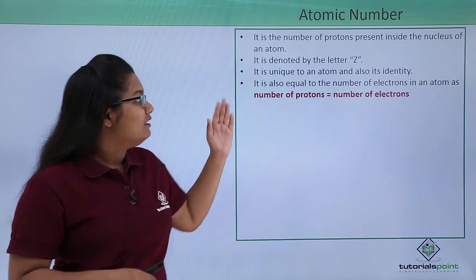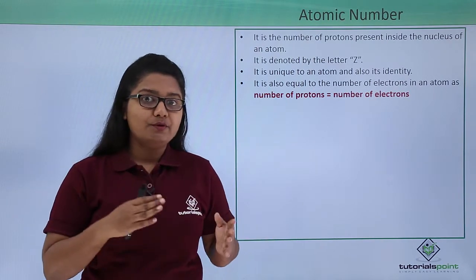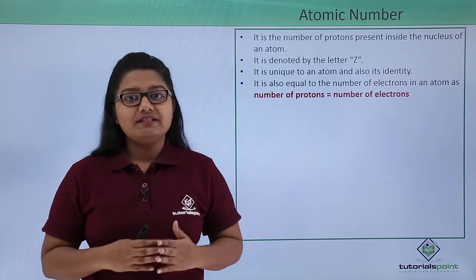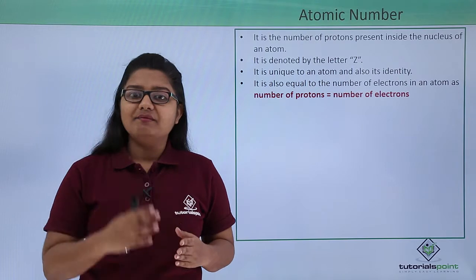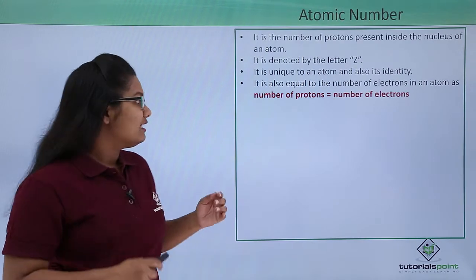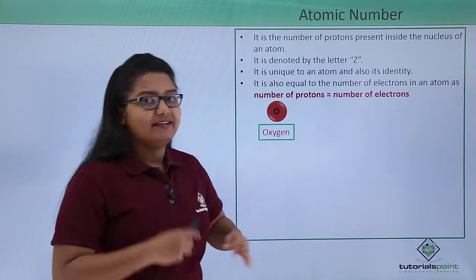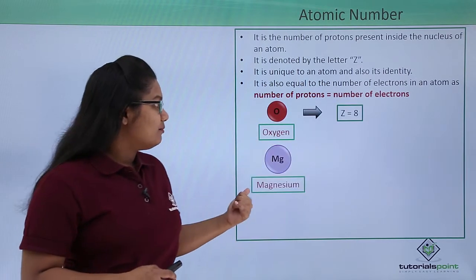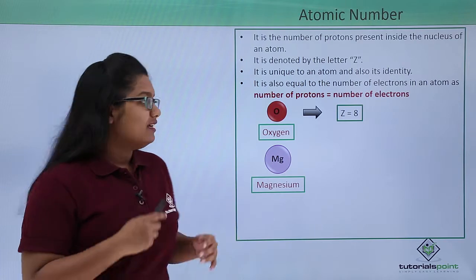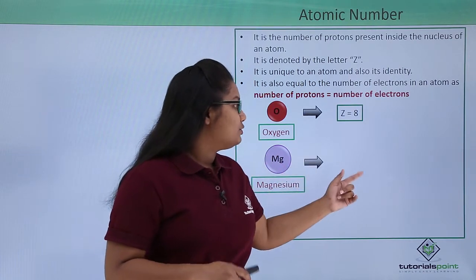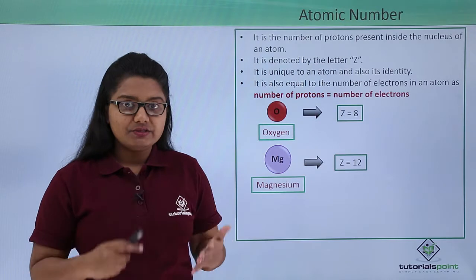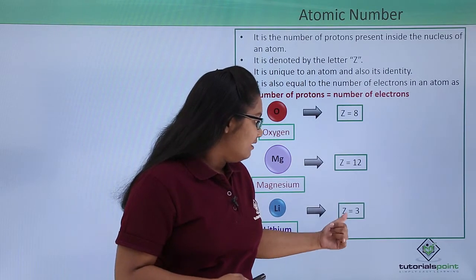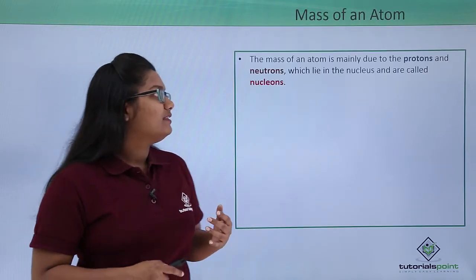A neutral atom has an equal number of protons and electrons, so for a neutral atom, the atomic number also denotes the number of electrons. For example, an oxygen atom has 8 protons, so its atomic number is 8. For a magnesium atom which has 12 protons, its atomic number becomes 12. And for a lithium atom which has 3 protons, its atomic number Z is 3.